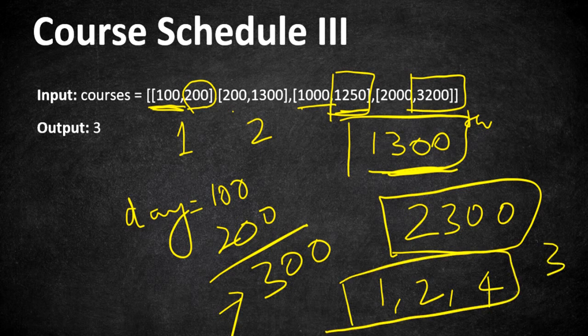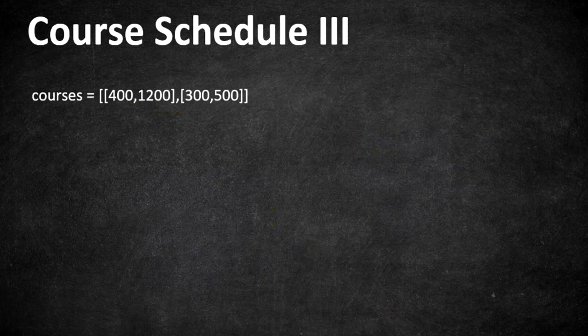So we can complete courses 1, 2, and 4 — a total of three courses — within the given time frame, and that is the output we return. Although this is a hard problem on LeetCode, once you understand it, it is very easy to implement.